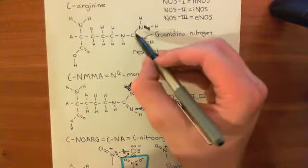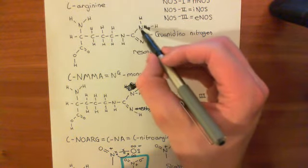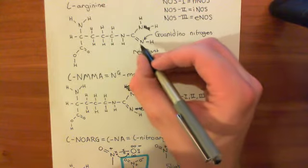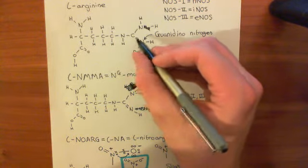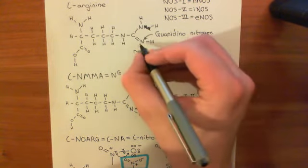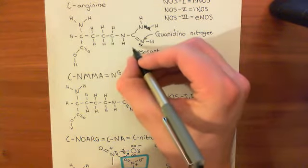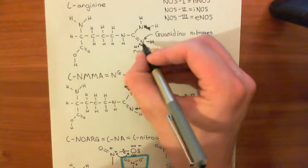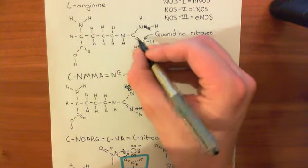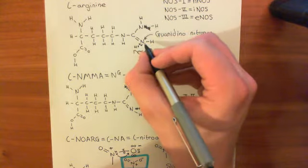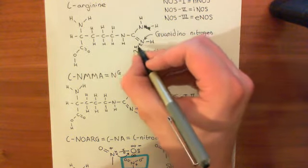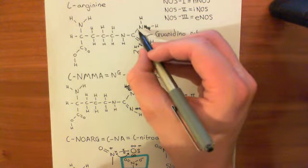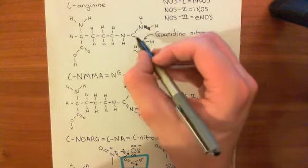So it's not really correct to say this one's the guanidino nitrogen and this one's not. They're both guanidino nitrogens because they're both flitting between this state. You might ask how this nitrogen with two hydrogens can form a double bond with the carbon. What you find is that this nitrogen, which has the double bond at the moment, has a lone pair of electrons and will pick up a proton. So this nitrogen, even though it has a double bond with the carbon, will actually have four groups around it. So flipping between this one having the double bond and this one having the double bond really makes no difference.